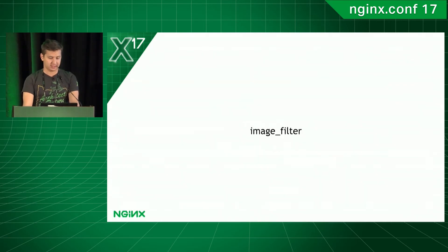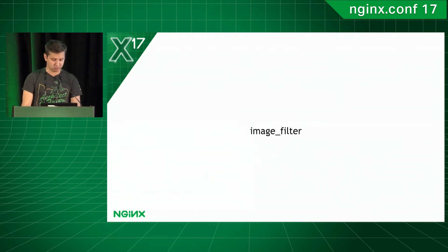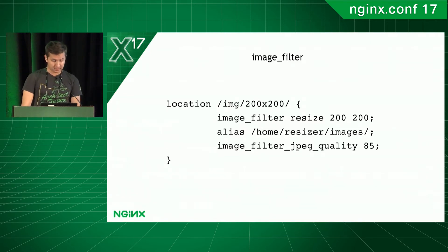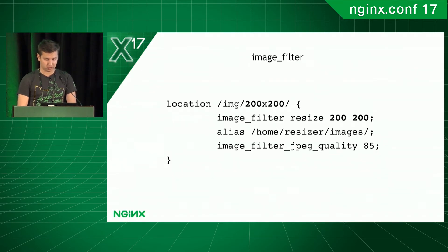Dynamic resizing can help us here. We recommend using the image filter module for this purpose. This module provides two options: resize and crop. To work with images, the module uses the libgd library, which is also used by PHP. Libgd in turn uses your system's libpng and libjpeg libraries for specific formats. The image filter configuration is straightforward: you describe the location where you want to serve pictures and configure the image filter directive, and all requests to that location will be resized to, for example, 200 by 200 pixels.